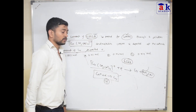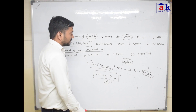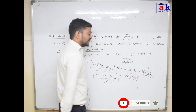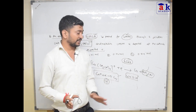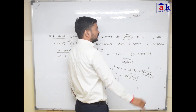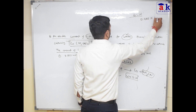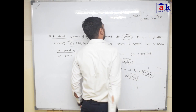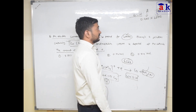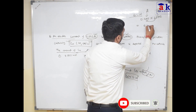अब हम formula use करेंगे: W = ZIT। सबसे पहले हम charge find out करते हैं। Q = IT, तो I = 0.965 Ampere, multiply by time = 2000 seconds। Units का ध्यान रखना — ampere और second ही use करना है। इसको multiply करने पर यह हो जाएगा 0.02 Faraday।